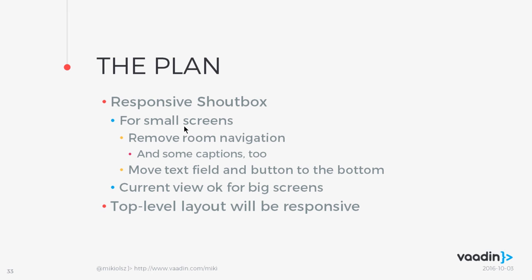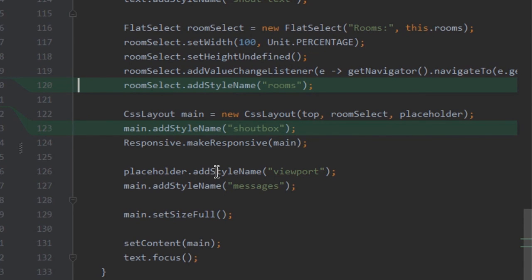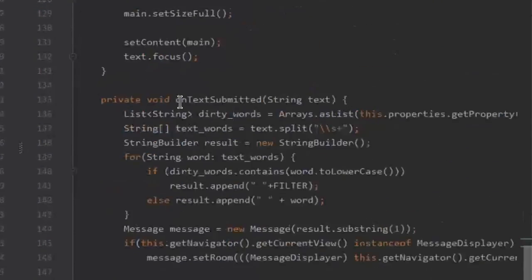How can we use it in practice? Let's make our Shoutbox a bit more responsive. For small screens, we are going to remove the room navigation completely and move the text field and the button to the bottom of the screen rather than the top. The top-level layout will be responsive. The change is that I just added a few style names — I'm making the main layout responsive and making sure it's called 'shoutbox' so I can refer to it. There is nothing else that changed — just this and some styles in the CSS file.